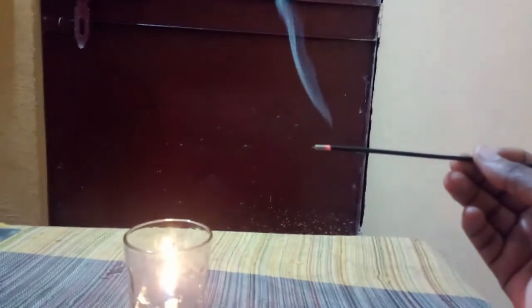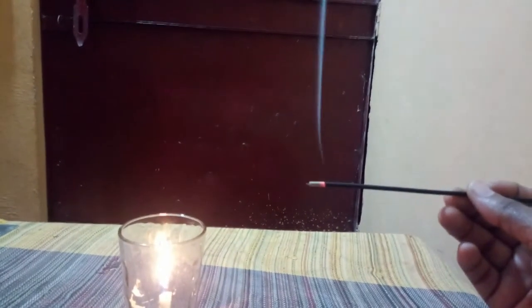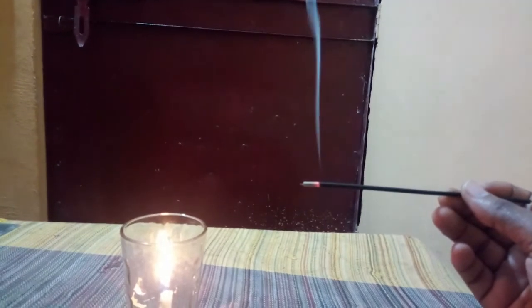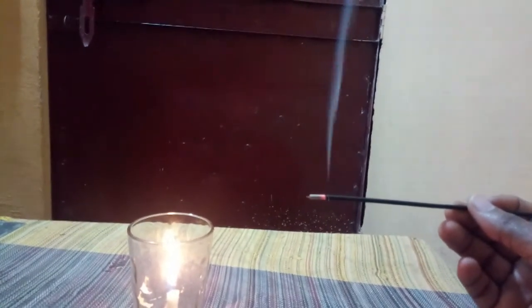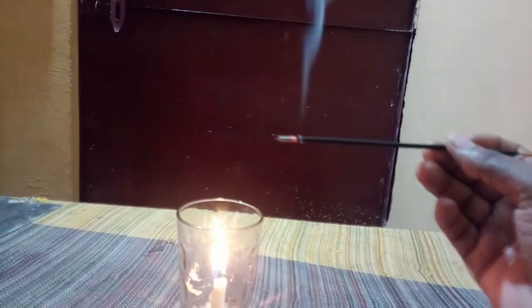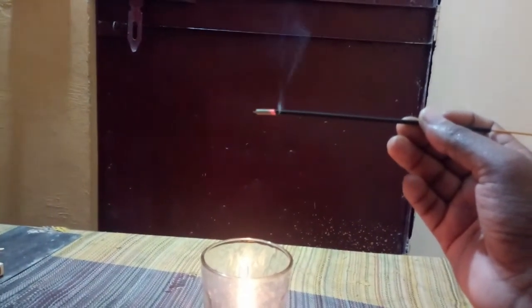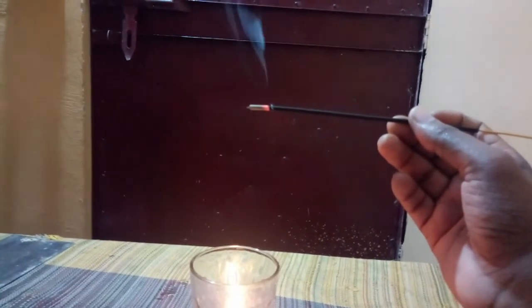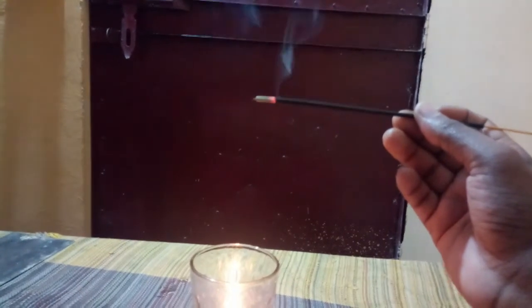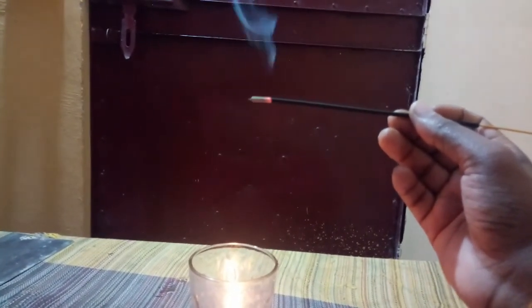When the same incense stick is kept away from the candle, the smoke will go up but with very slow speed. So this smoke here is now in the form of breeze. But when you bring this incense stick closer to the candle or just above the candle, you will see a change in the speed of the smoke. Now it is going up very fast. Now this pattern of smoke represents the storm. So we have two different kinds of current of air or wind.